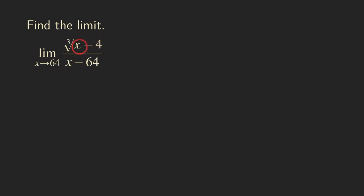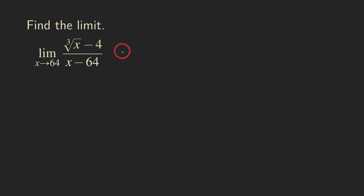If you look at this one here, if you plug in 64 into the cube root, you're going to get 4 — 4 minus 4, you're going to get 0. And if you plug in 64 in the denominator, you are also going to get 0. So we are getting 0 over 0, and that's an indeterminate form. So we cannot really draw any conclusion for what this function is approaching.